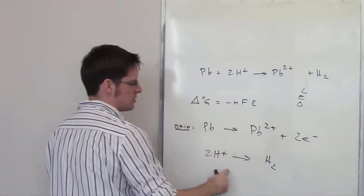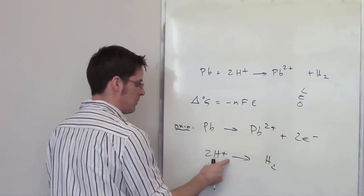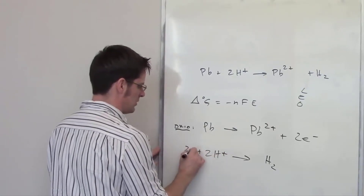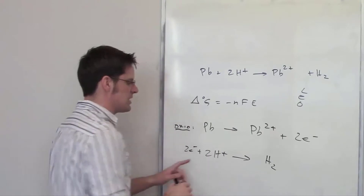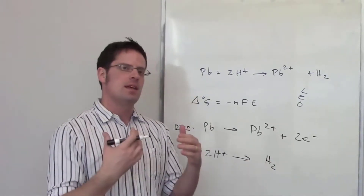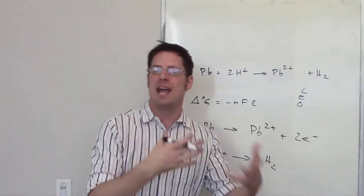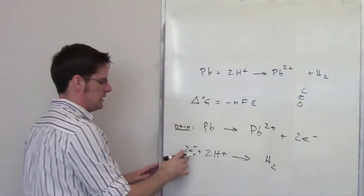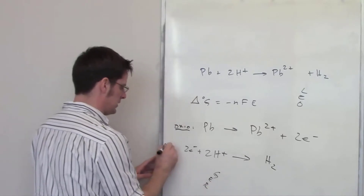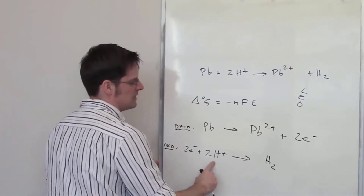Separately, looking at charge: H2 has zero charge, and the left side has a positive two charge. To balance that, I add two electrons to the left side. The hydrogen is going from a positive one oxidation number to a zero oxidation number — becoming less positive by accepting electrons. When you gain electrons, that is reduction. So H plus is being reduced.